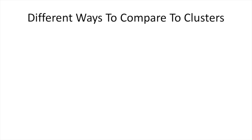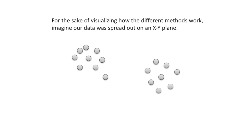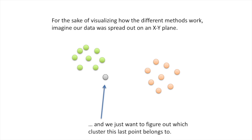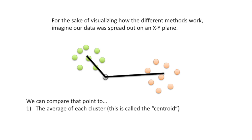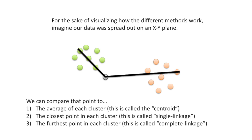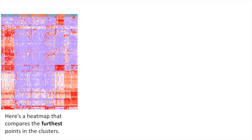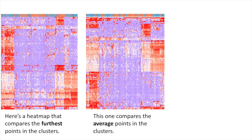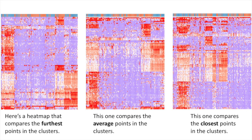Now, remember how we merged genes one and three into cluster number one and compared it to other genes? There are different ways to compare clusters too. For the sake of visualization, imagine our data is spread out on an XY plane and we have already formed two clusters. We can compare a point to the average of each cluster — this is called the centroid. Or to the closest point in each cluster — called single linkage. Or to the furthest point in each cluster — called complete linkage. Here's a heat map using complete linkage — the default for R's hclust function. This heat map uses average linkage, and this one uses single linkage. These heat maps are all very similar, but there are differences in how the data is presented.